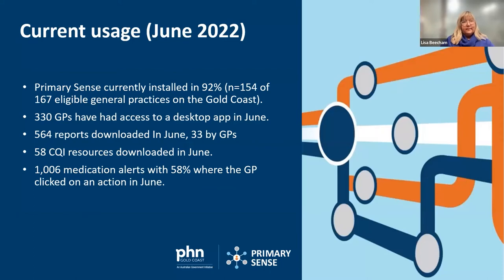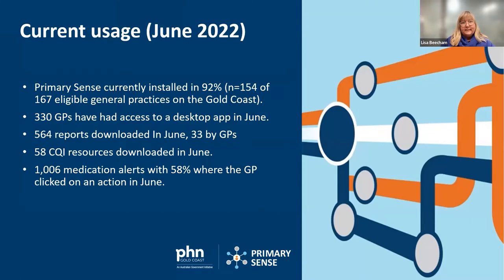Primary Sense extracts the patient's clinical history and related data for the past five years or another set period. For instance, in the hemochromatosis data it goes all the way back. It extracts and updates every few minutes so that it is up-to-date, timely, and able to be relied upon as good data.